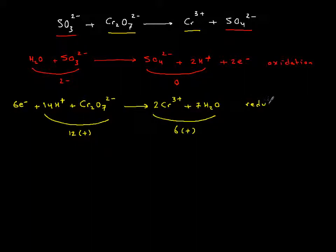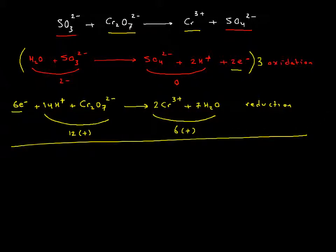Last thing to do, the number of electrons have to be equal. Six is not equal to two, so let's multiply the equation above by a factor of three and then let's just add them up.